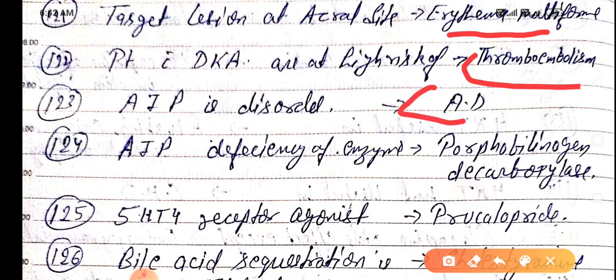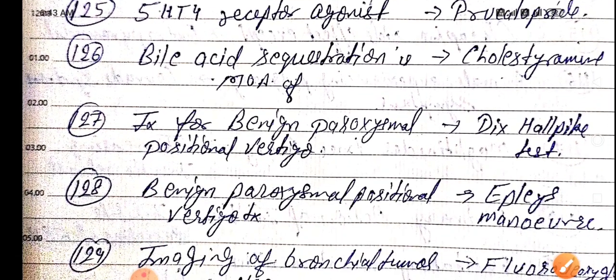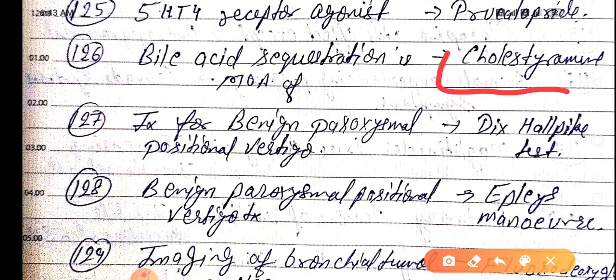AIP — acute intermittent porphyria — is an autosomal dominant disorder. The enzyme deficiency in acute intermittent porphyria is porphobilinogen deaminase. 5HT4 receptor agonist is prucalopride. Bile acid sequestration is the mechanism of action of cholestyramine.